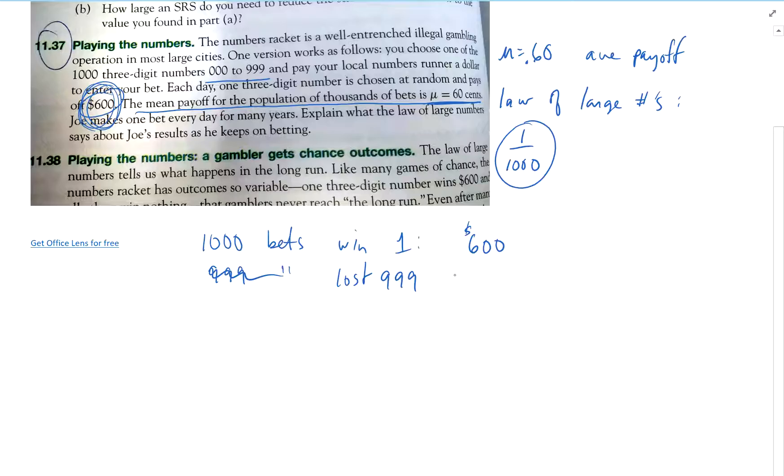So, you lost $999. So, roughly $1,000. So, you really lost, what's that, roughly $400. This is really $599, so you really lost $400. So, really, and if I divide that by a thousand bets, because you played a thousand times, that's really, you know, $0.40, $0.40 per game.